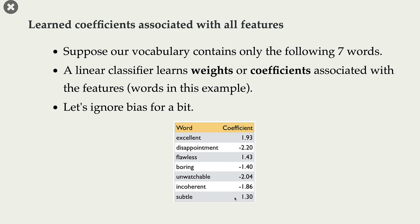What do we see? The words 'excellent,' 'flawless,' and 'subtle' have positive coefficients, whereas the words 'disappointment,' 'boring,' 'unwatchable,' and 'incoherent' have negative coefficients.